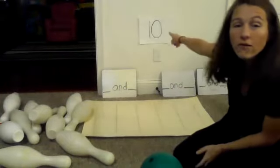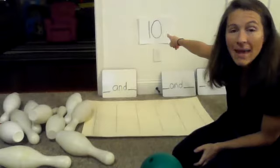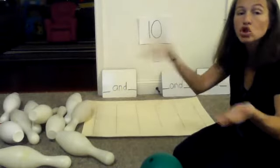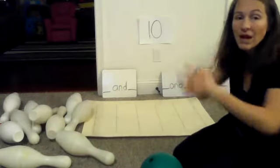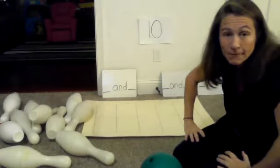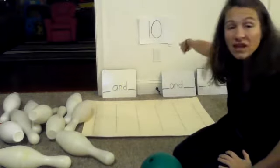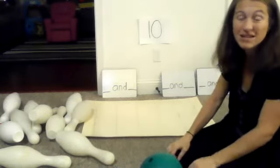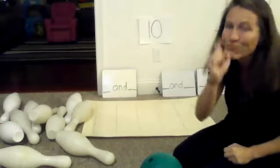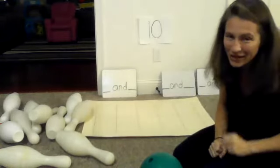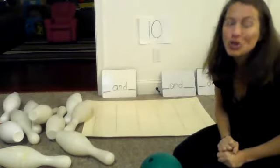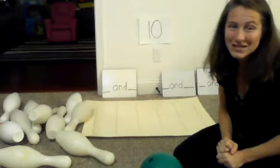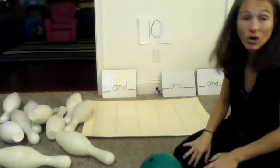Today in math we are going to find all the ways to make the number 10. That means we're going to get two parts — two different numbers — and when they go together they make 10. That's called combinations to 10, or number pairs to 10, or just different ways to make 10. You — Santino, Riley, Brian — you are going to find out different ways to make 10. So to do that, we're going to start with some bowling.